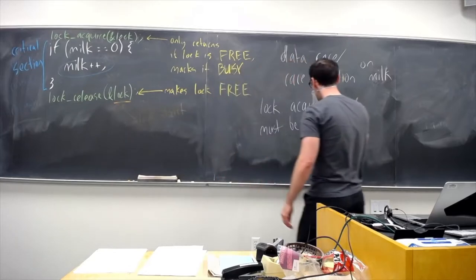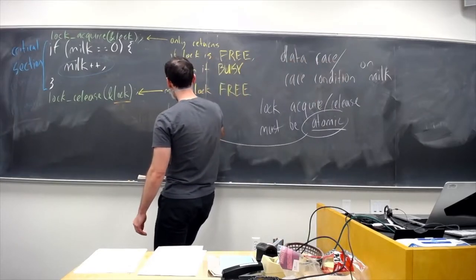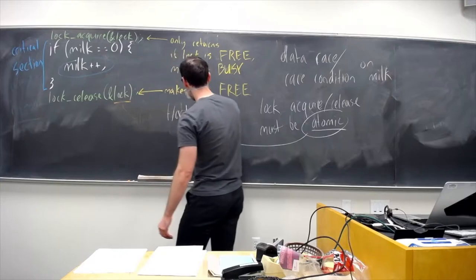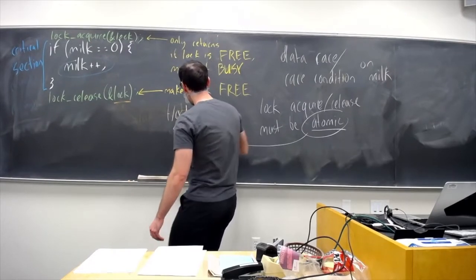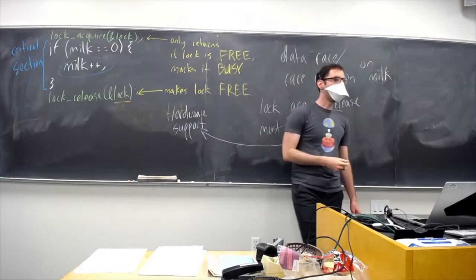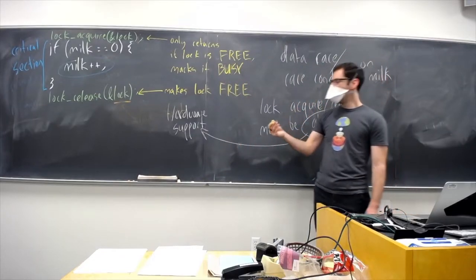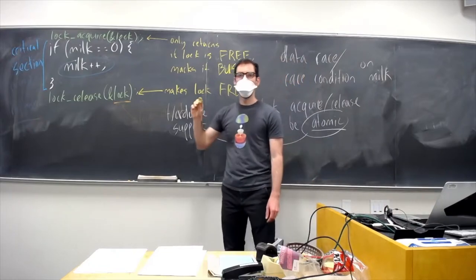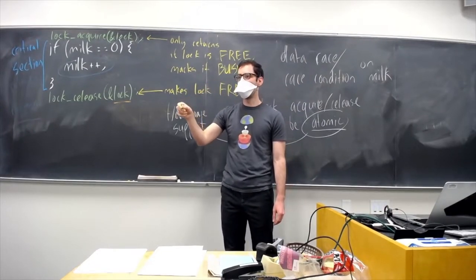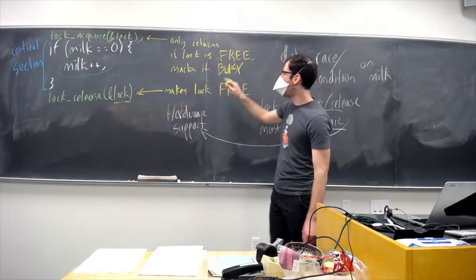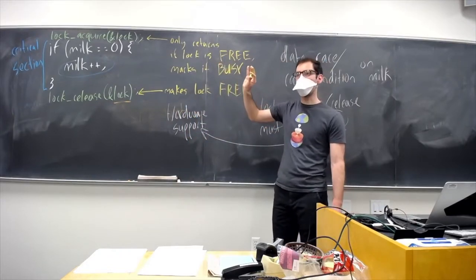An important component of making this actually work — aside from disabling interrupts — is that making this atomic is going to rely on hardware support. The CPU will provide some instruction that lets us atomically change a lock from free to busy.